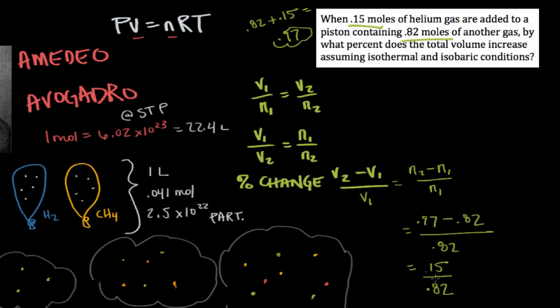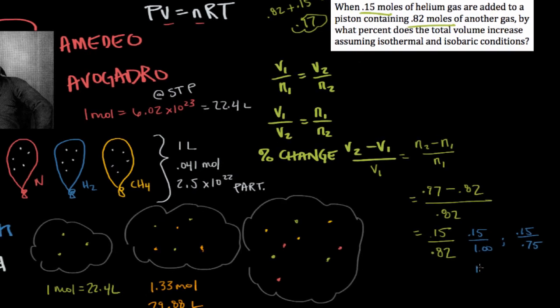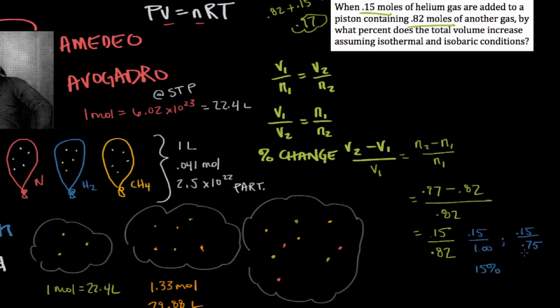But I want to take a second and think about how we could think about this with some common sense and use rounding to give us an approximate answer. 0.15 divided by 0.82 is between 0.15 divided by 1 and 0.15 divided by 0.75. 0.15 divided by 1 is 15 percent, and 0.15 divided by 0.75 would give us 20 percent, because one-fifth is 20 percent.